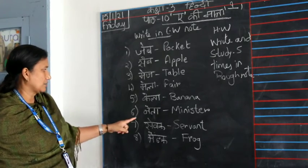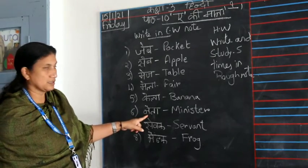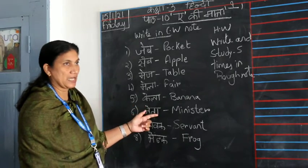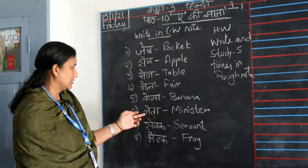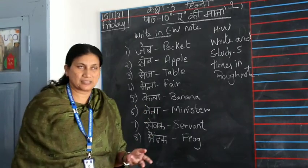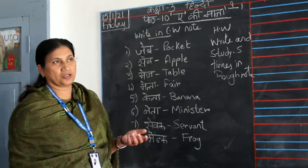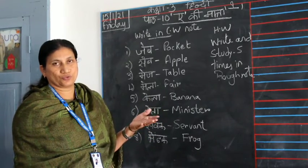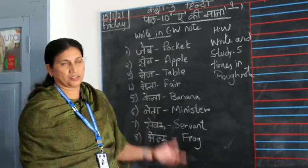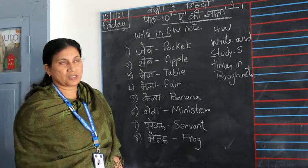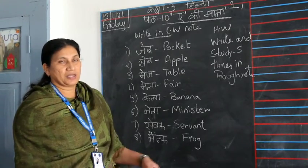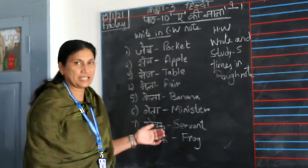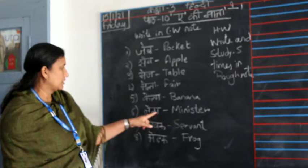Now the sixth one is 'Neta.' N-E-T-A. Neta means a minister — a person who goes around asking for votes, or a person who governs a particular area or state, like the Prime Minister of India. These are all ministers, so they are called Netas.